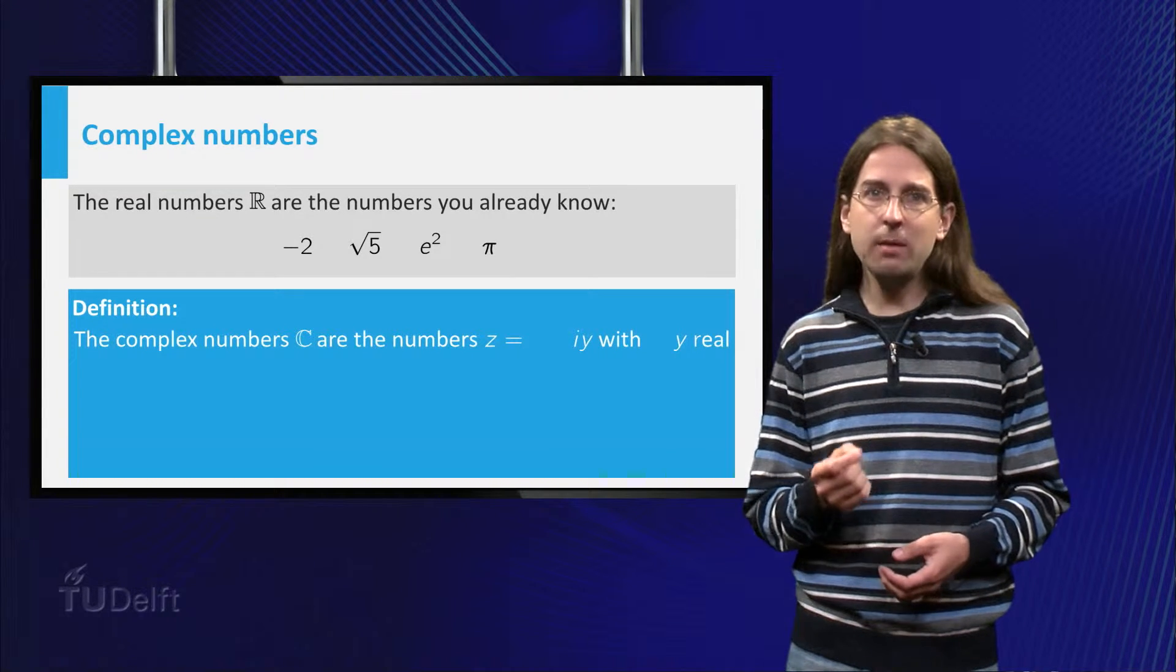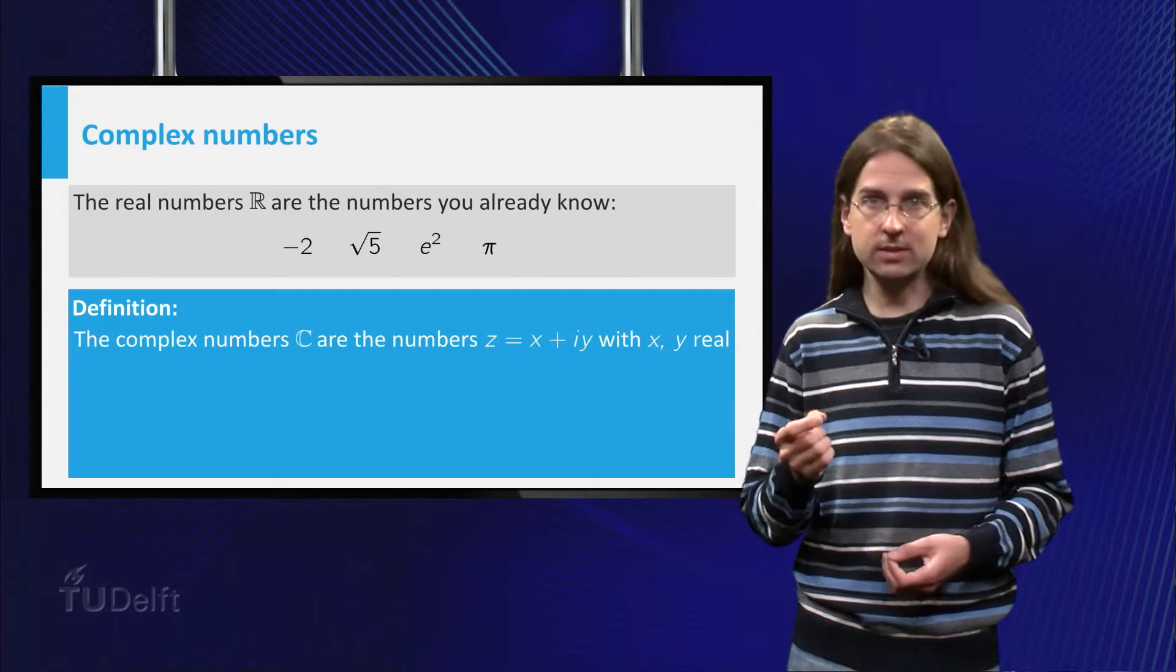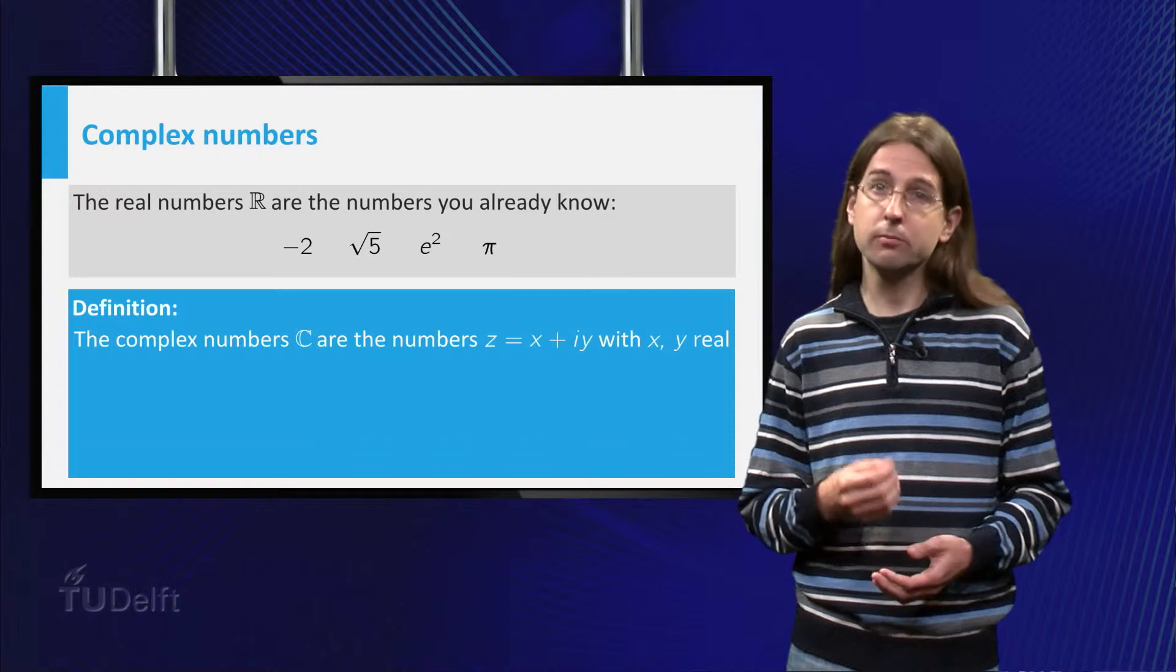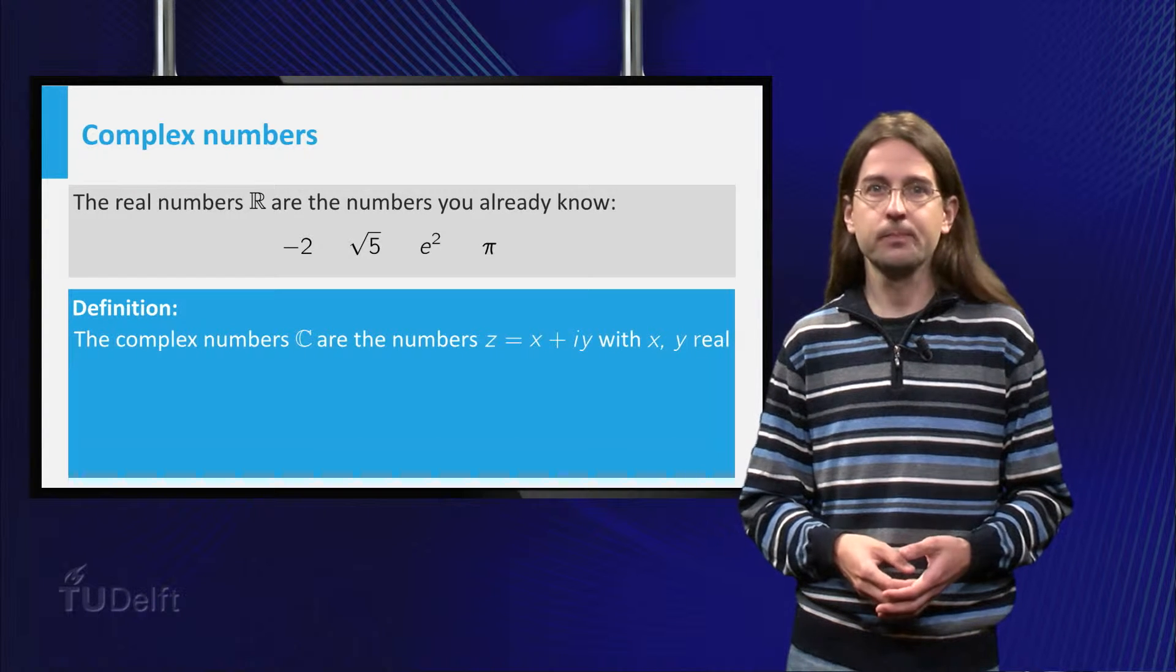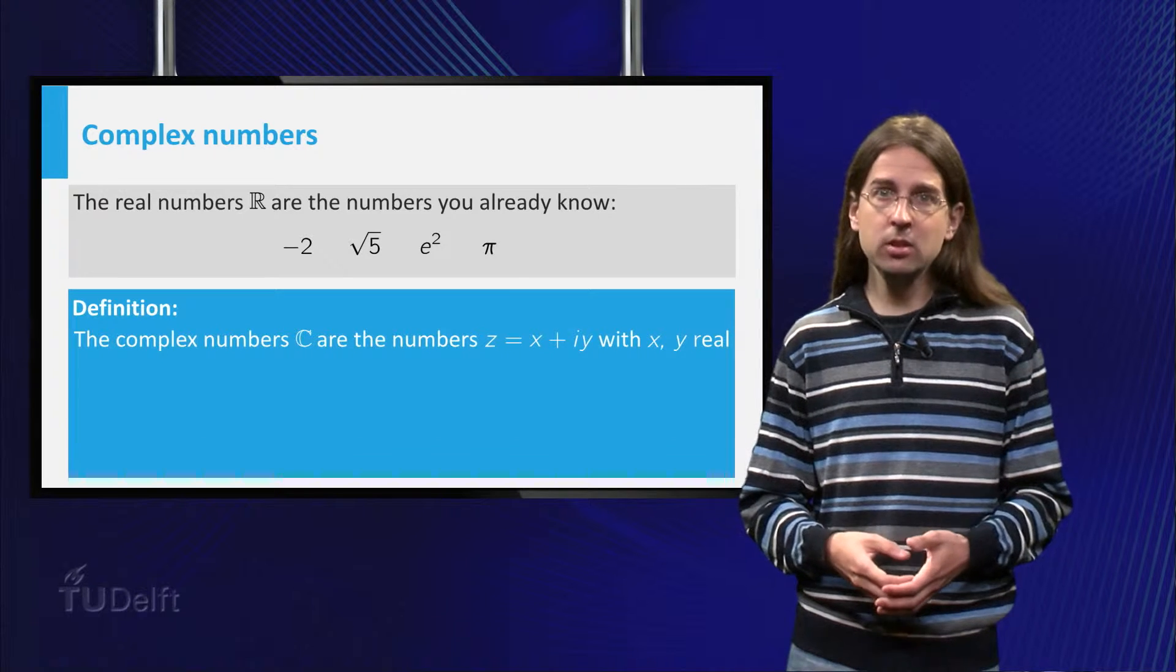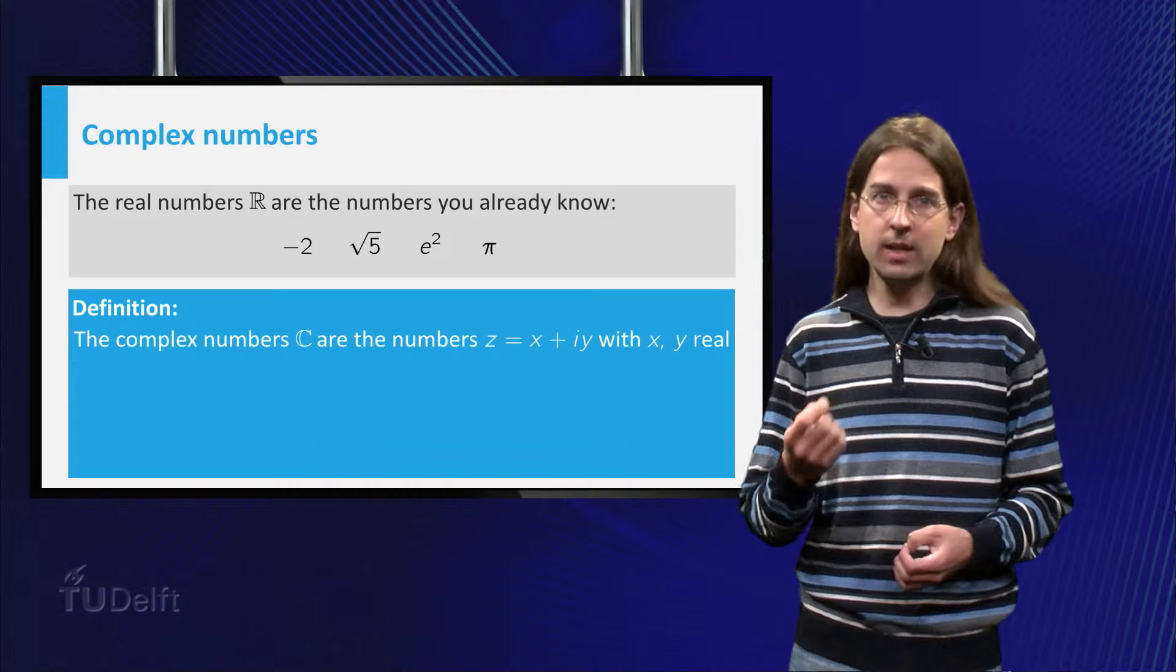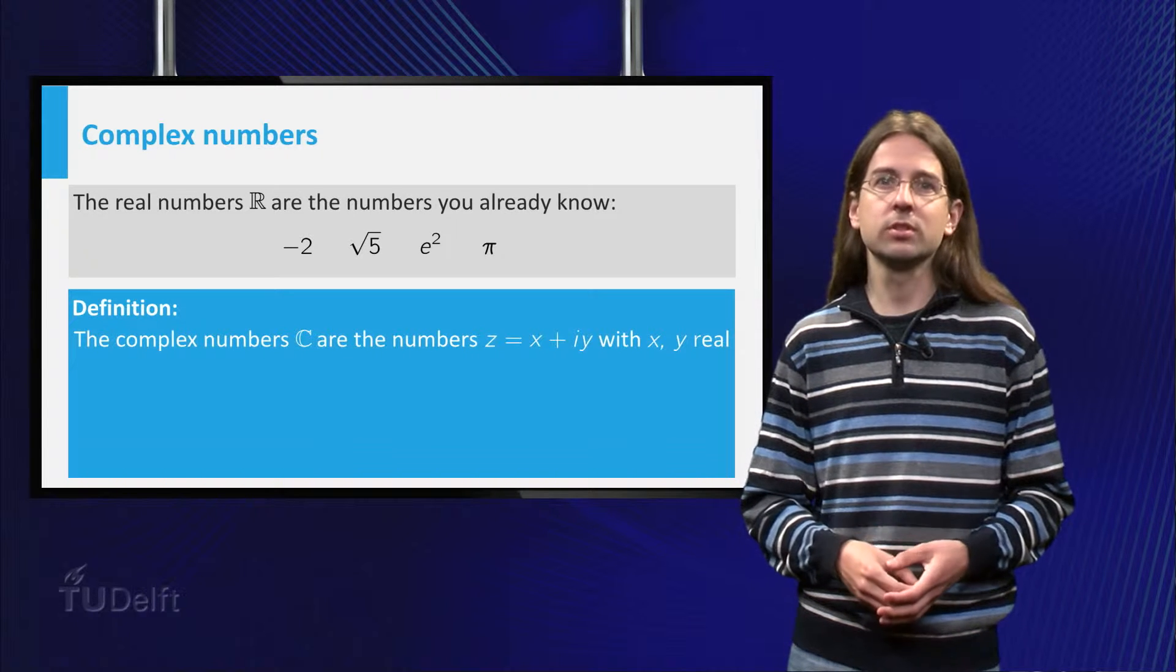And since we want to be able to add, we also consider the addition x plus i times y for real numbers x and y. Complex numbers are by definition all numbers z, which can be written as x plus i times y, with x and y real numbers.